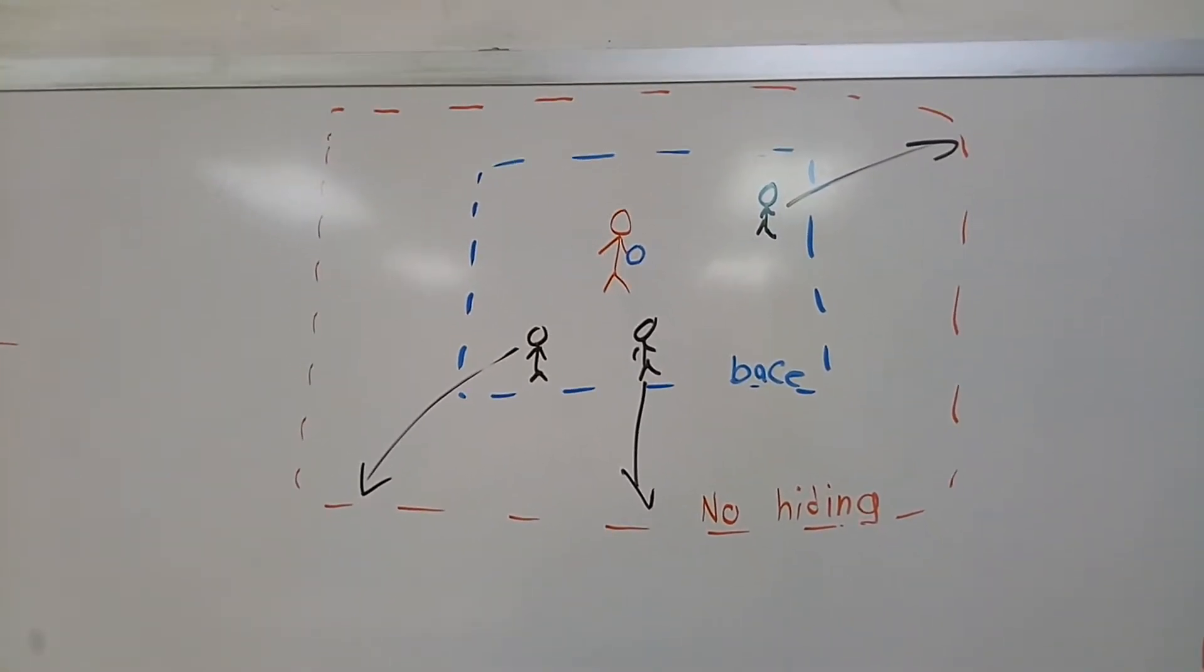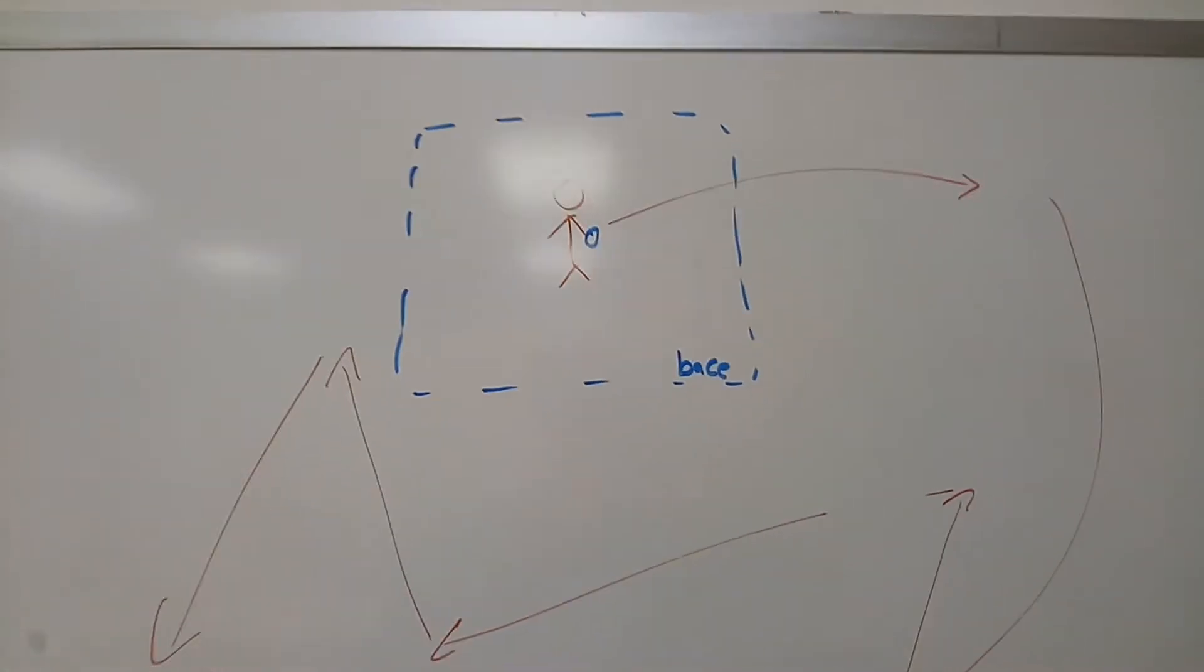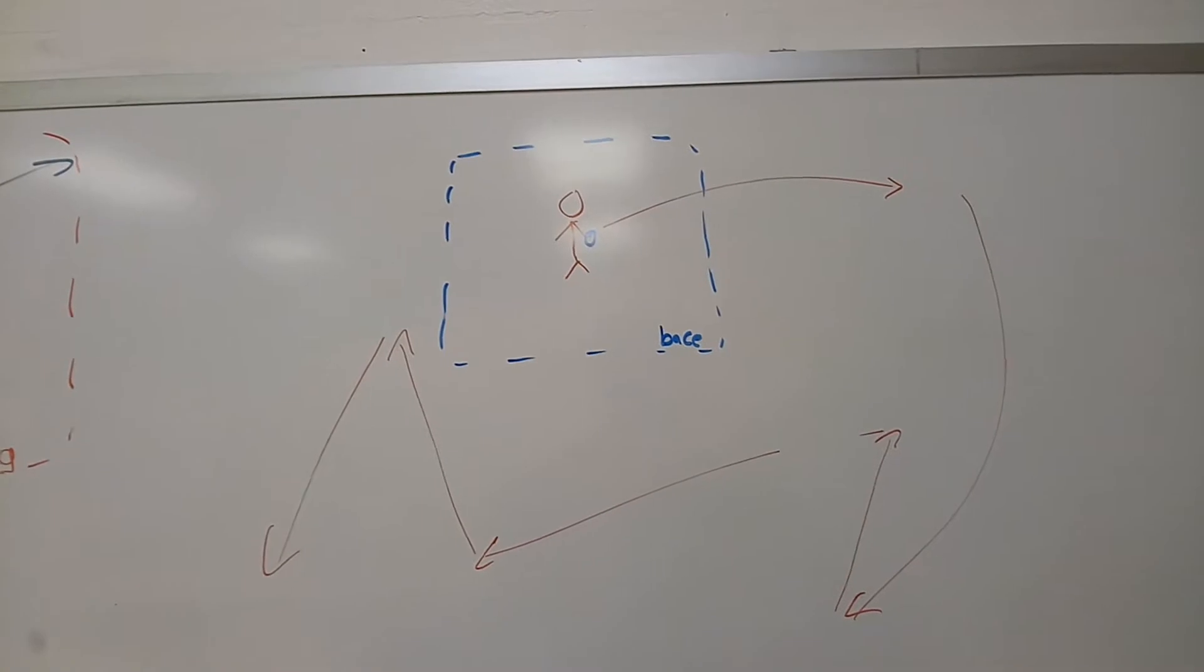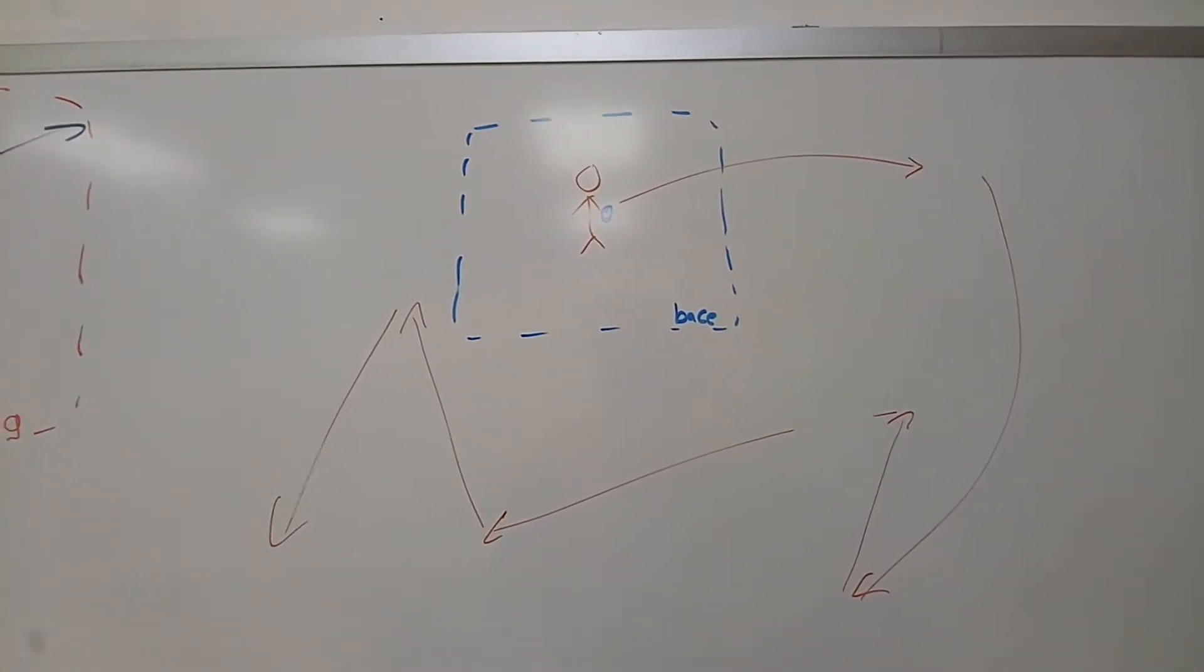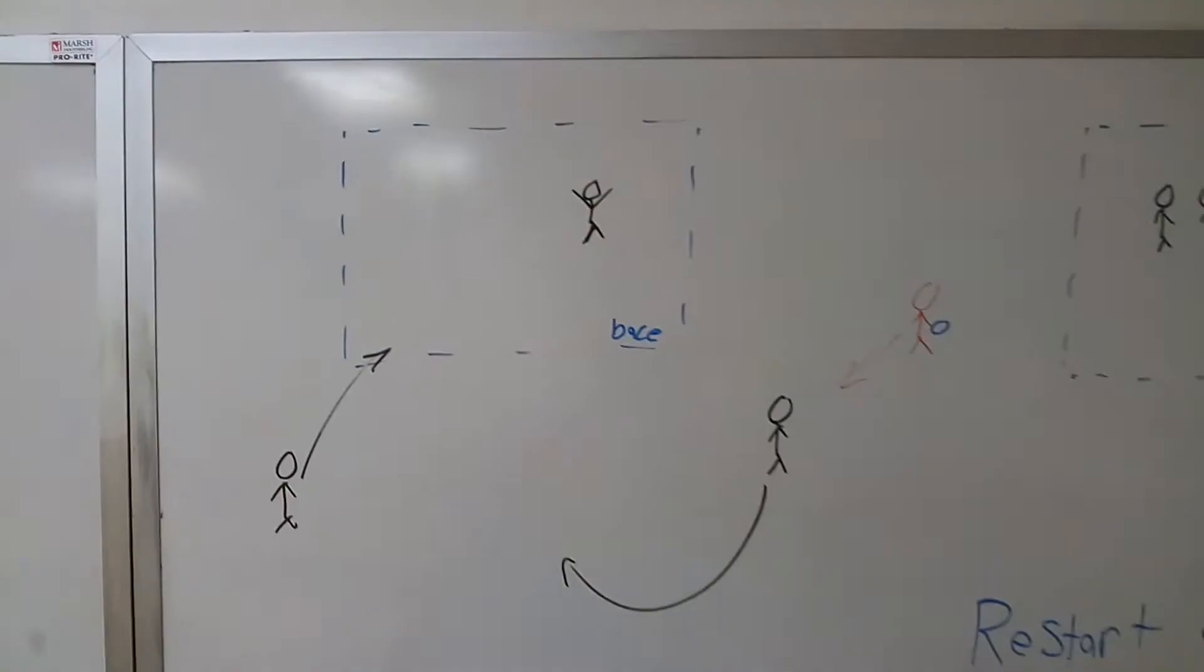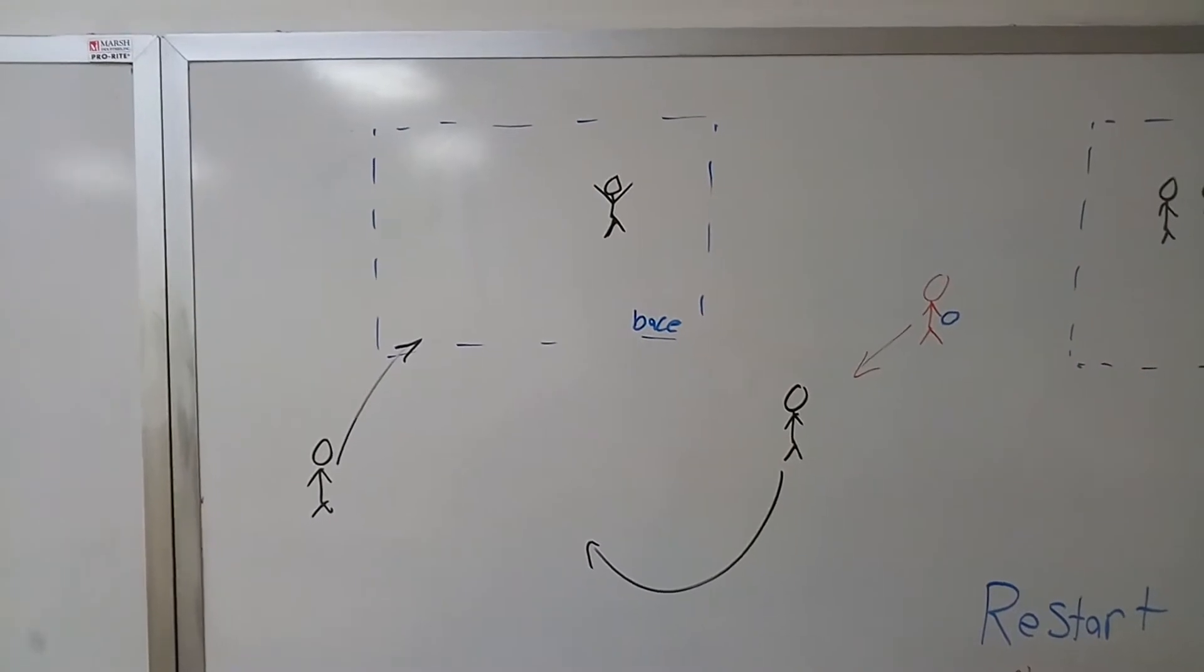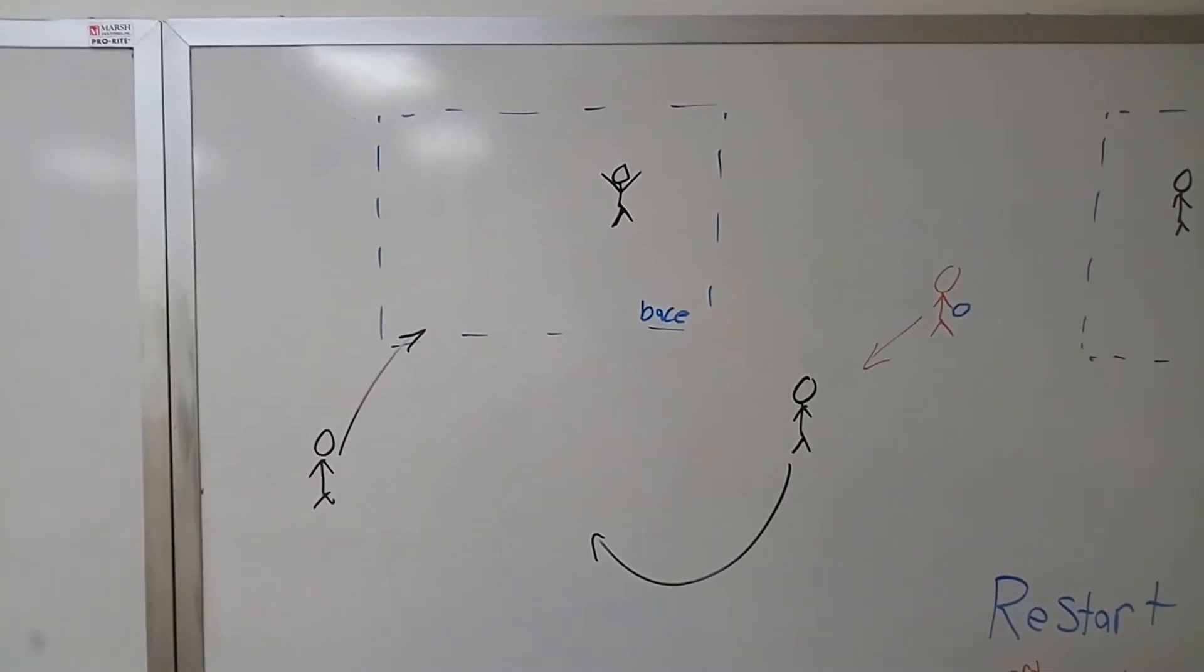Decently far so you can't touch the base right off the bat. Everyone's hiding. The person that's it goes and runs around and tries to find where everyone else is, to find everyone that's hiding. While the person that's it is running around looking for people, everyone else is trying to get back to base without being tagged by the ball.